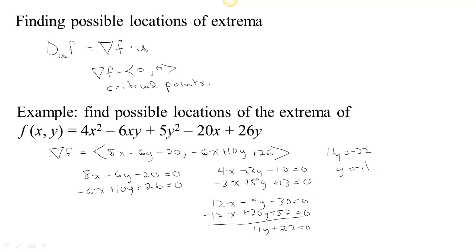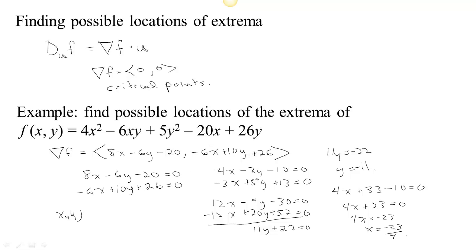Knowing that y is negative 2, we substitute back into the first equation: 4x minus 3 times negative 2, which gives 4x plus 6 minus 10 equals zero, so 4x minus 4 equals zero, meaning x equals 1. Actually, working through the original computation: y equals negative 11, and substituting into 4x minus 3(negative 11) minus 10 equals zero gives 4x plus 23 equals zero, so x equals negative 23 fourths. So there is just one critical point at (negative 23/4, negative 11), the one location where the gradient is zero and there could be an extreme point.